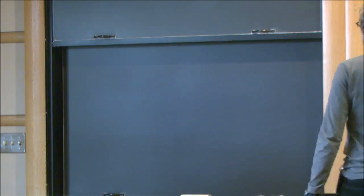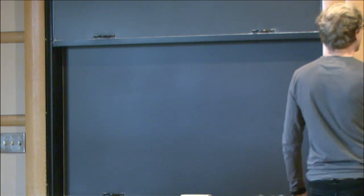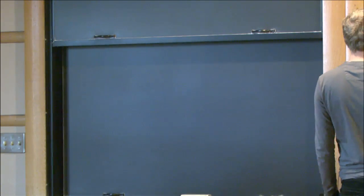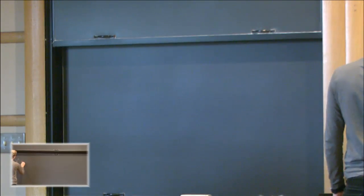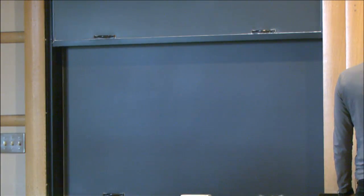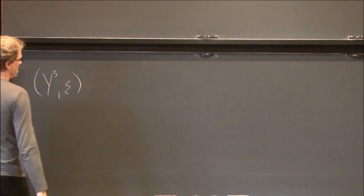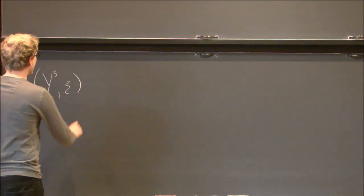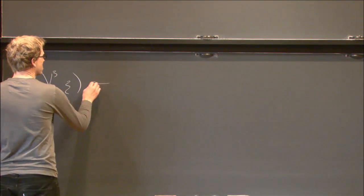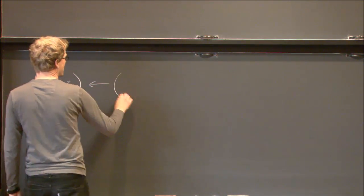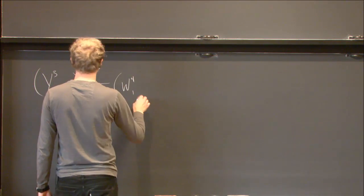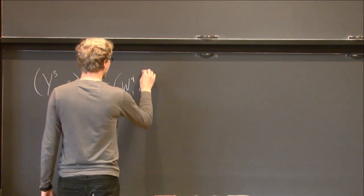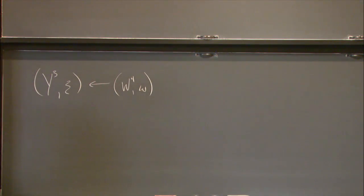I want to look at the following picture: we've got a 3-manifold with some contact structure, and we want to understand the ways in which this can be realized as the boundary of some symplectic 4-manifold with some additional constraints on it.